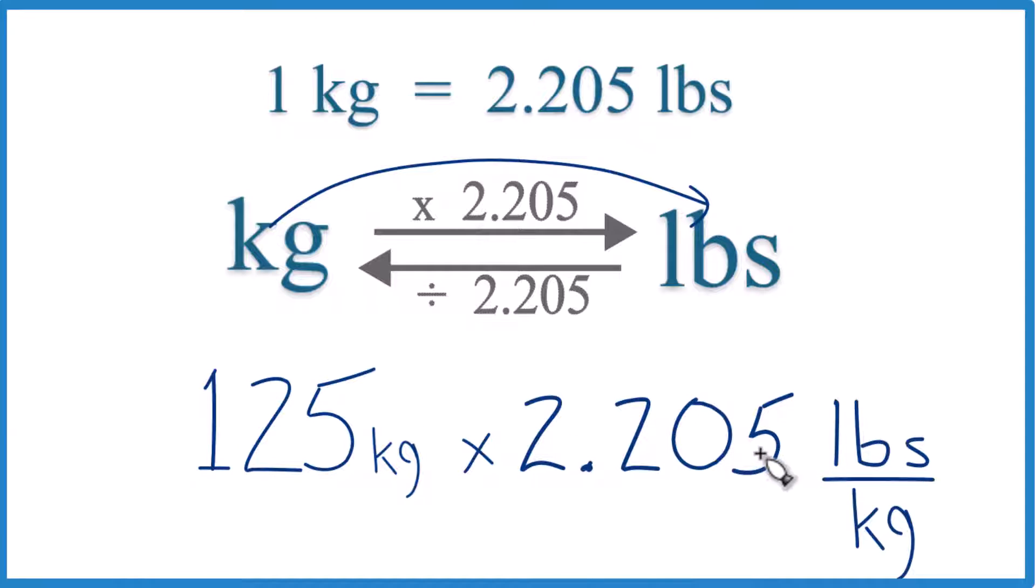And we have 2.205 pounds per kilogram - that's the conversion factor from right here. Because we multiply, kilograms on top and bottom cancel out, leaving you with pounds. You did it right.